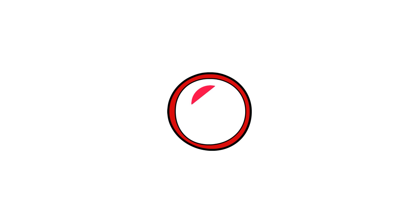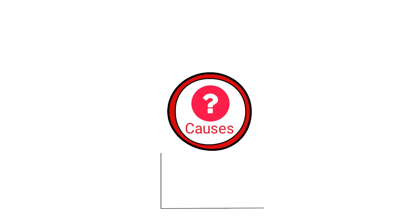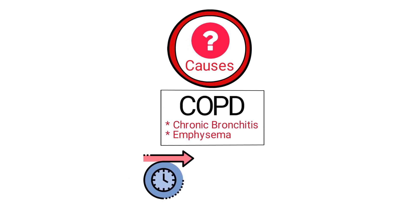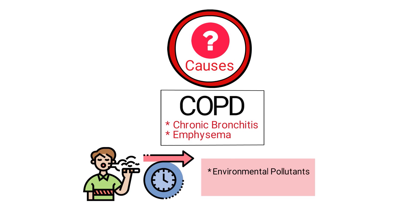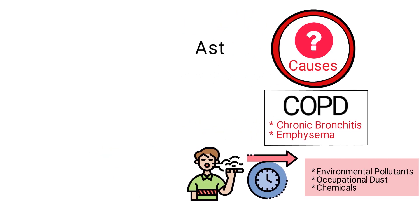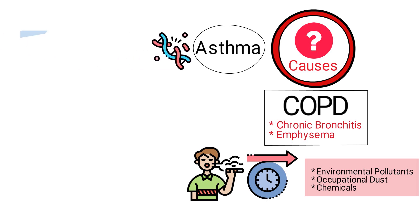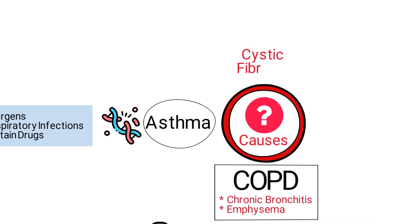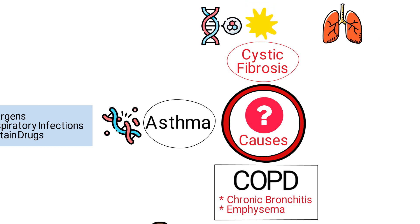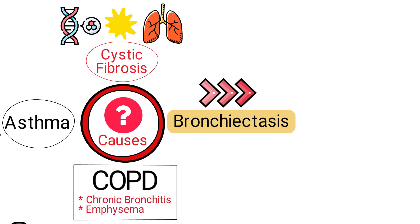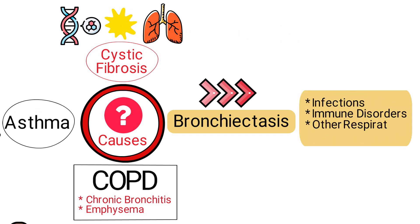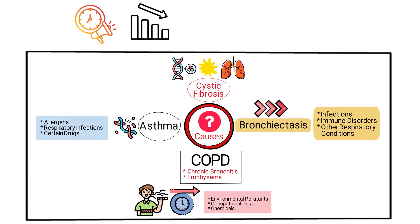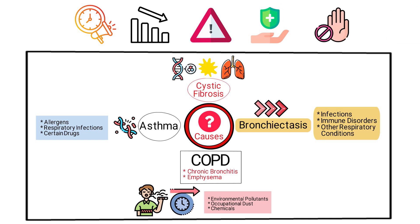Next, let's talk about the causes, because obstructive lung diseases arise from various causes. COPD, which includes chronic bronchitis and emphysema, is predominantly linked to long-term smoking, but prolonged exposure to environmental pollutants, occupational dust, and chemicals can also contribute. Asthma's etiology often involves a combination of genetic predisposition and environmental factors, including allergens, respiratory infections, and certain drugs. Cystic fibrosis is caused by a genetic mutation that leads to the production of thick, sticky mucus in the lungs. Bronchiectasis can result from persistent infections, immune disorders, or be a complication of other respiratory conditions. Early interventions and reducing exposure to risk factors can prevent or mitigate the progression of these diseases.